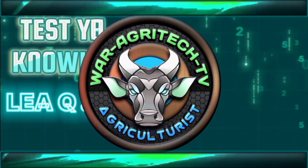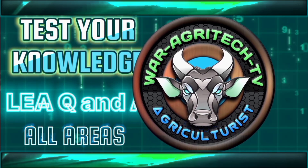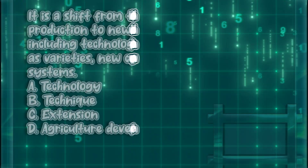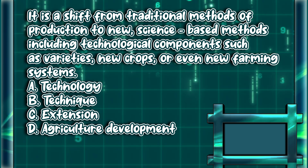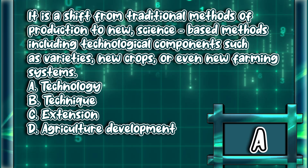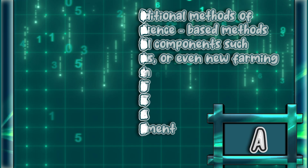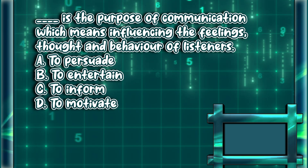Test your knowledge — Leah Q&A, all areas. It is a shift from traditional methods of production to new science-based methods, including technological components such as varieties, new crops, or even new farming systems. A) technology, B) technique, C) extension, D) agriculture development. The answer is letter A.